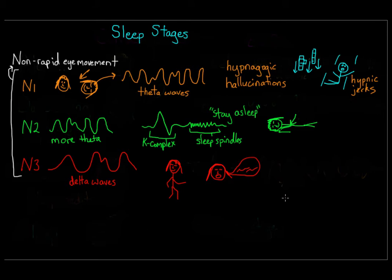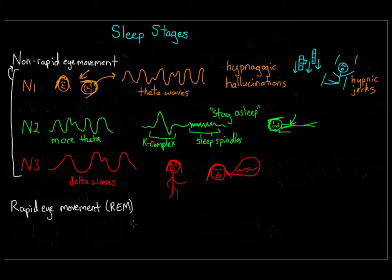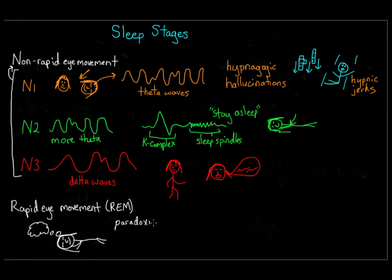The last stage is REM sleep. REM stands for rapid eye movement, because during this stage your eyes move rapidly beneath your lids. Most of your other muscles are paralyzed, which is actually a good thing — most dreaming occurs during REM sleep, so if you weren't paralyzed, your muscles might act out whatever you were dreaming about, which could be unsafe. REM sleep is sometimes called paradoxical sleep because your brain seems very active and awake, but your body is prevented from moving.